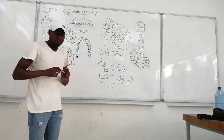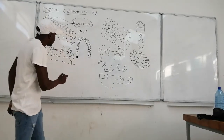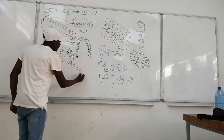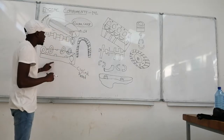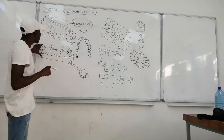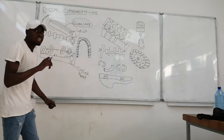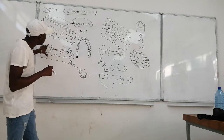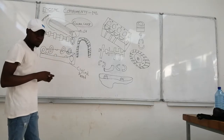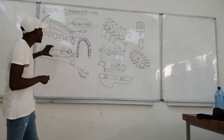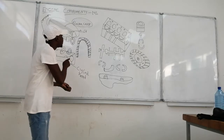Our third component is the cylinder head. The function of the cylinder head is to keep the cylinders inside so that they don't slip out. It also contains or consists of valves alongside the cylinders.